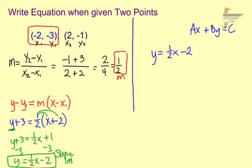And we want to have the x's and the y's on the same side. So we'll go ahead and subtract 1 half x from both sides. So we have a negative 1 half x plus y equals negative 2.